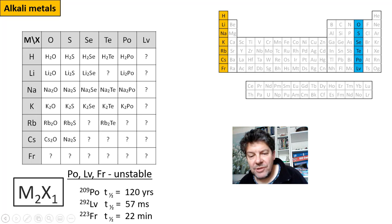But for the compounds that do exist, they all have the same stoichiometry. Two metals to each one group 16 atom. It's good that they all have the same M2X1 stoichiometry. But remember, this was one of the criteria for the ordering of the elements in the periodic table.